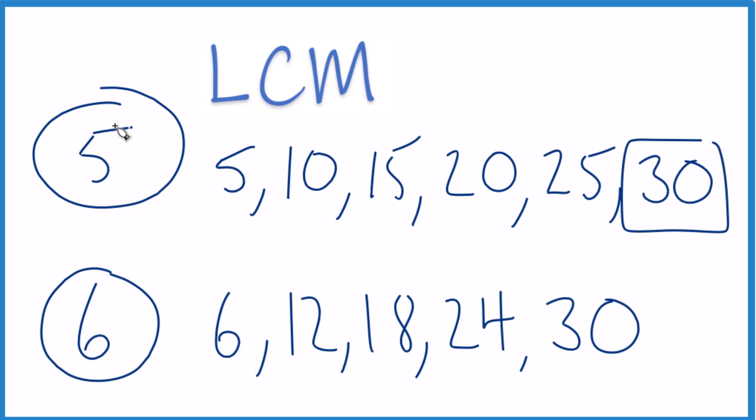That's the common multiple, the number that 5 and 6 both go into evenly. And it's the smallest number because it's the first one we came across.